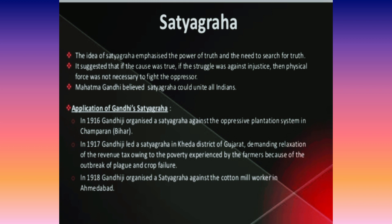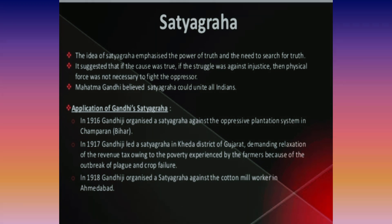Talking about the application of Gandhi's Satyagraha, he organized three movements. Two of them were organized in 1917 — one in Champaran in Bihar, and the second in the Kheda district of Gujarat. The third one was organized in 1918, and it was a Satyagraha movement organized by the cotton mill workers of Ahmedabad.